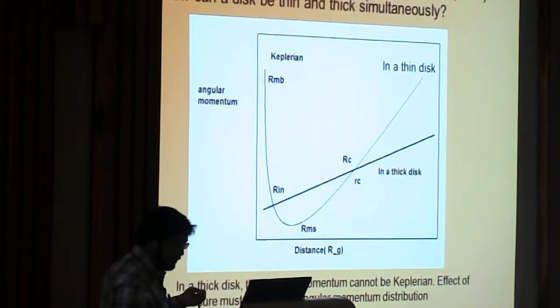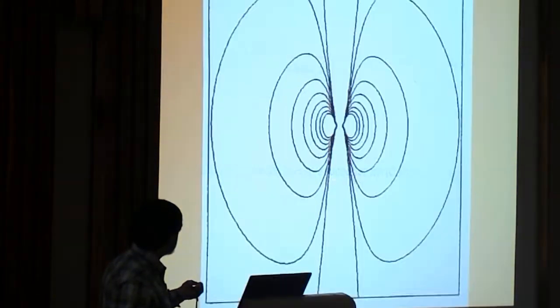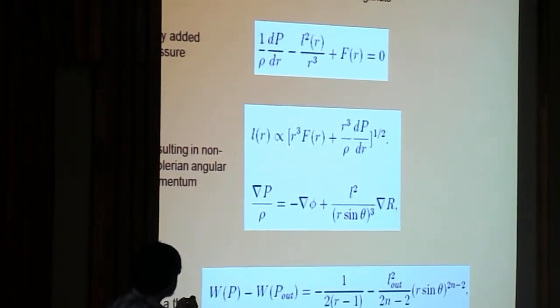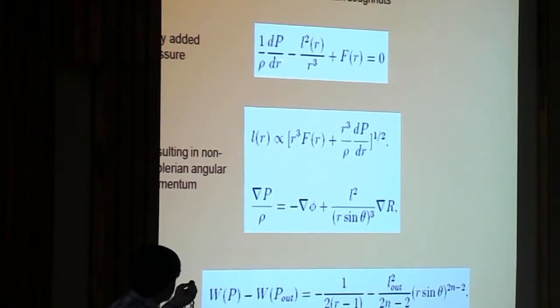And therefore, and typically we say, yes, at these two places, what happens is, why are the Keplerian? Because at these two places, this term is zero.